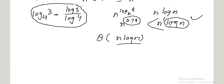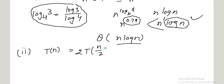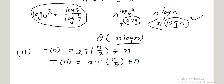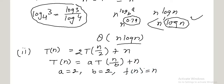The second question asked is T(n) = 2T(n/2) + n. Comparing with the general form aT(n/b) + f(n), the value of A is 2, the value of B is 2, and the value of f(n) is n.